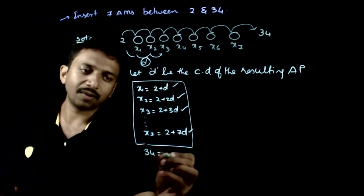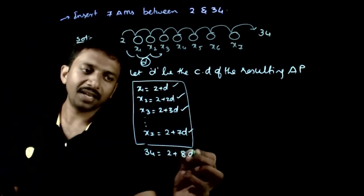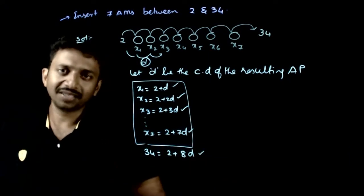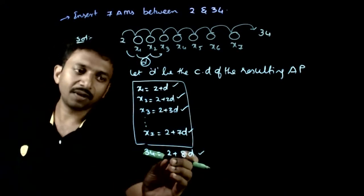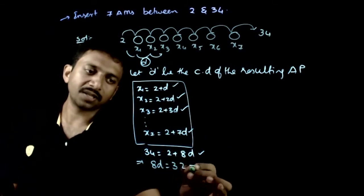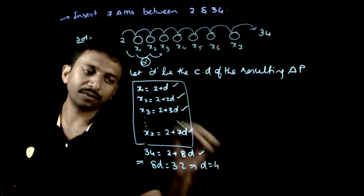34 is equal to 2 plus 8D. So this is the important equation from which you get D. From this equation, 8D is equal to 32. This implies D is equal to 4.